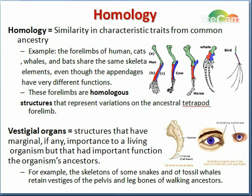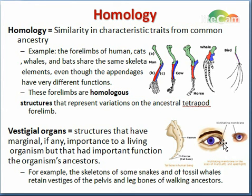Vestigial organs are defined as structures that have marginal, if any, importance to the living organism. So the current organism living today has structures that really have very little use, but those structures had an important use in the ancestors of that organism. For example, the skeletons of some snakes and fossil whales have vestiges of a pelvis and leg bones of their walking ancestors. Another example is this flap within the eye.